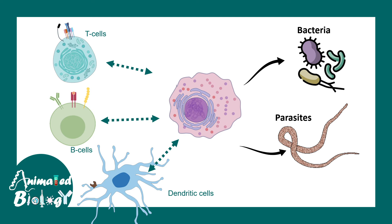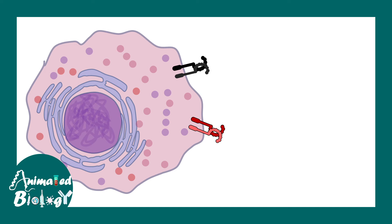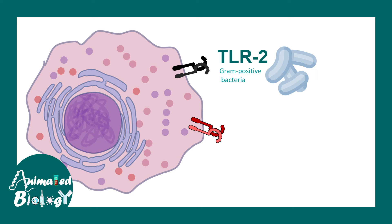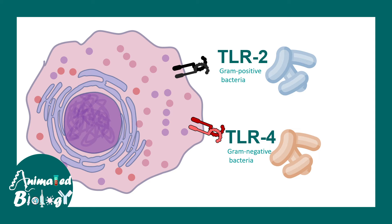Mast cells have pattern recognition receptors such as TLR2, which broadly recognizes gram-positive bacteria and a few selective gram-negative bacteria, and also TLR4, which is generally sensitive to gram-negative bacteria. Through these receptors, mast cells can recognize pathogens and take action to eliminate them.